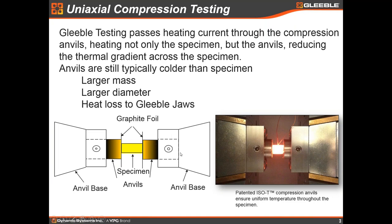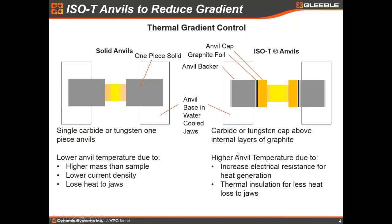Typically, if you use a solid anvil, you will get an anvil that will warm up, but it typically will not be nearly the temperature of the sample. This is usually because the anvil has a larger mass and a larger diameter than the sample, so the current density will be lower and it will heat up less. Typically it also loses a lot of heat to the Gleeble jaws, so the anvil stays cooler and may even have a thermal gradient from the surface where it contacts the sample to the jaws. This is okay in some instances, but sometimes you want a more uniform thermal gradient. DSI has developed what we call ISO-T anvils, which stand for isothermal anvils. Eric will get into a little more of this detail later.